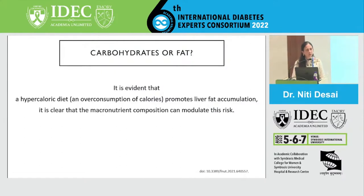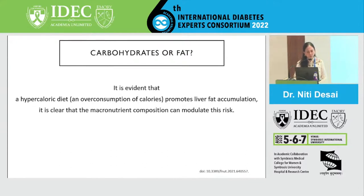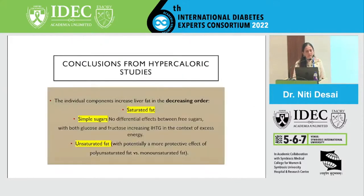The whole conversation today is whether we should be restricting carbohydrates or fat in the treatment of NASH. It is very obvious that when one takes in extra calories — consuming more than required — there will be liver fat accumulation. But it is also clear that the macronutrient composition can also modulate that risk. When studies were done with hypocaloric diets, the conclusion arrived at is that saturated fat is the primary nutrient which really increases the liver fat.